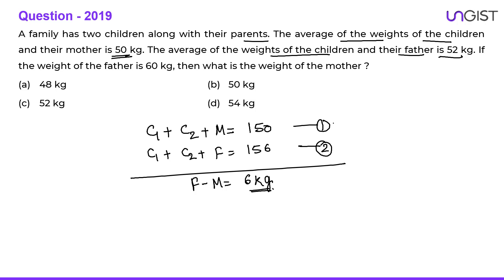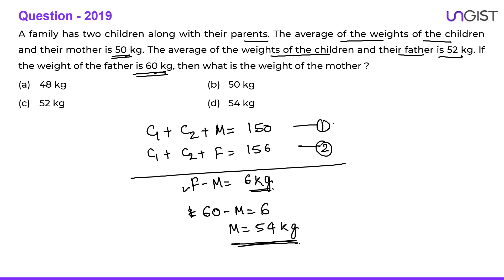The question says the weight of father is 60 kg. So putting the value in father minus mother equals 6, mother will be 60 minus 6, which is 54 kg. So the weight of mother is 54 kg, and option D is the correct choice.